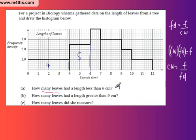How many leaves have length greater than 9 centimeters? So this is this one, and then the next one to it. Class width is 1, frequency density is 2, so the answer is going to be 2 for that one. Now, this one right here is 2 multiplied by 1, which is 2. So the class width is 2, the frequency density is 1, 2 times by 1 is 2.